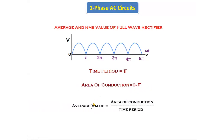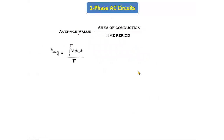The average value formula is: area of conduction divided by time period. We find the area of conduction using integration, and the time period is π. So V_average equals the integral over the area of conduction from 0 to π of the voltage waveform V dωt, divided by the time period π.